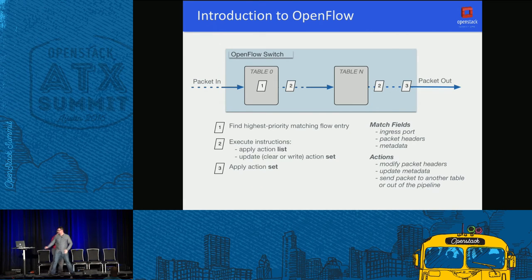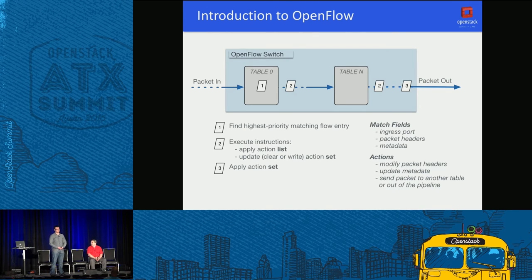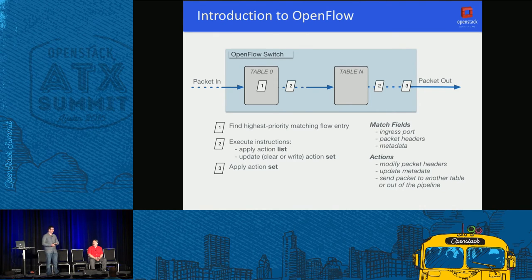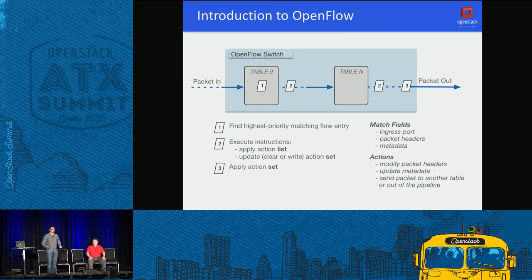The OpenFlow switch has a number of tables with flow entries. A flow entry consists of a matching case, counters, and an action list. The matching case is the criteria to match on; counters track the number of packets, bytes, creation time, and idle time; the action list defines one or multiple actions. You can drop the packet, send it on normally, or - in this case - modify the type-of-service field or diff-serve field to change the DSCP value.